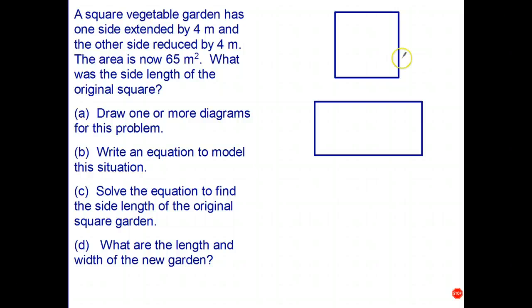We're trying to find the side length of the original square. Let's call that X. Because it's a square, both sides are X. We've modified it so this side has been reduced by four meters and the other side has been extended by four meters. We now have a length of X plus four and a width of X minus four. The new area is sixty-five square meters.